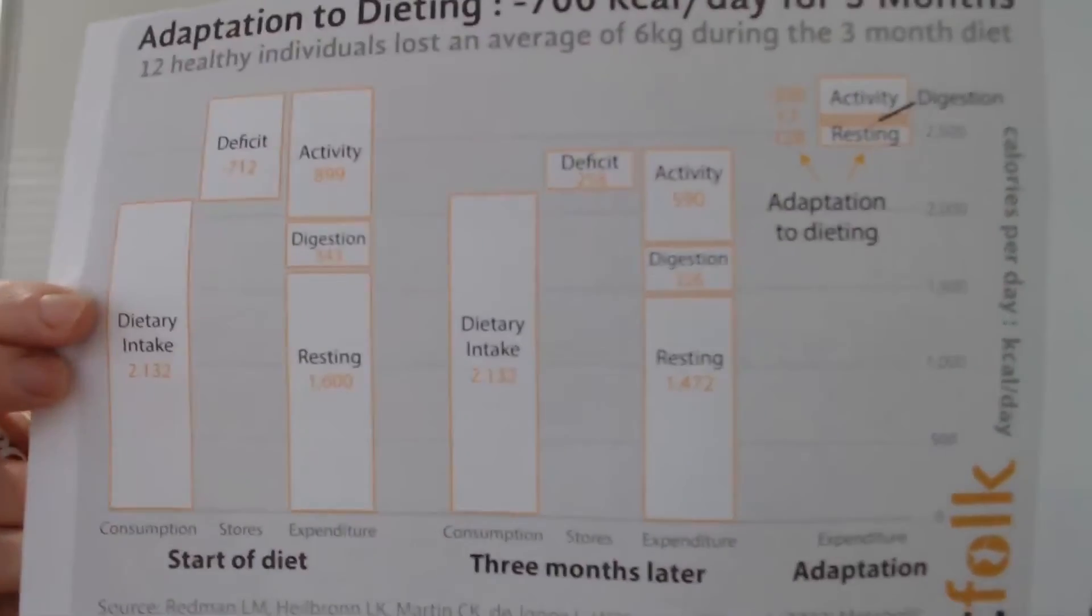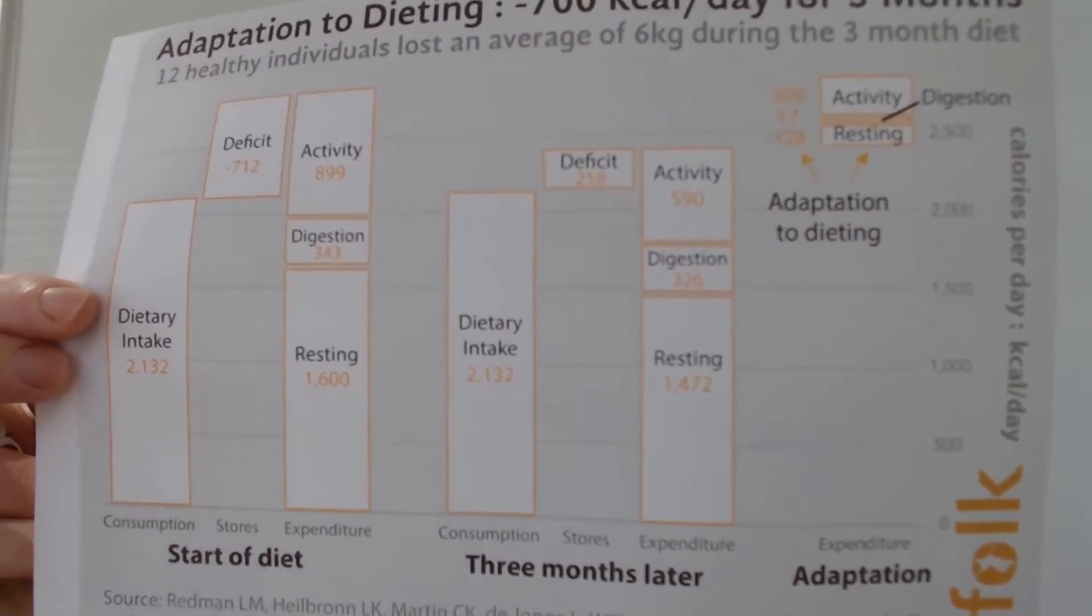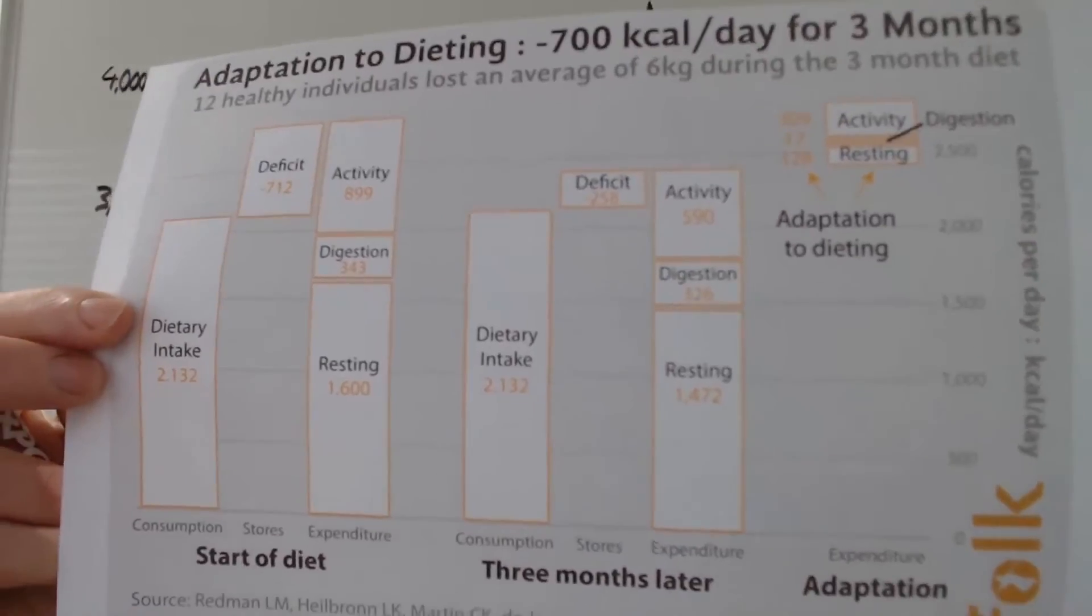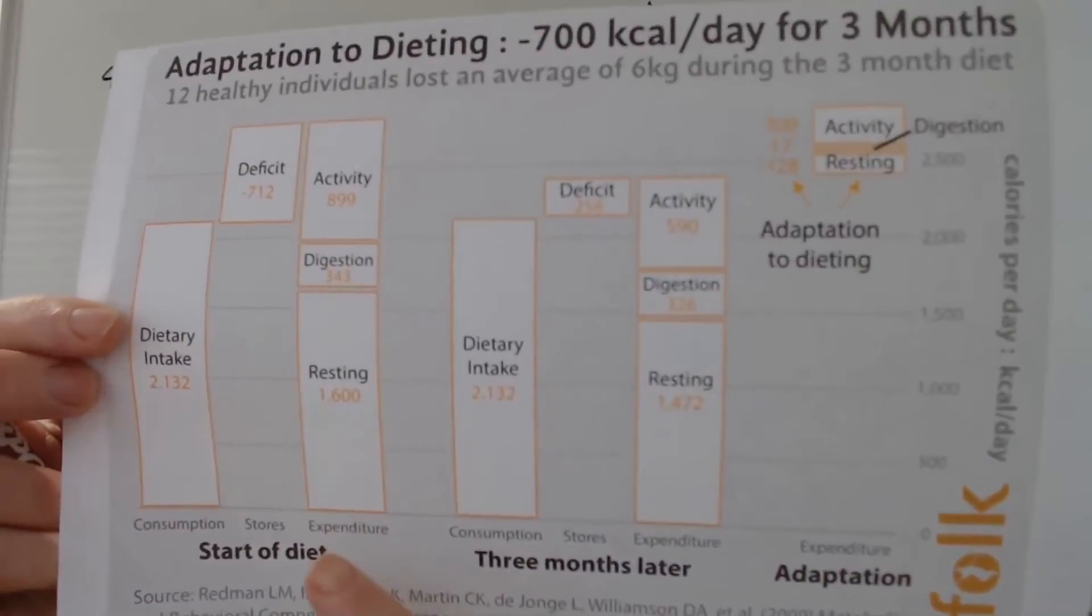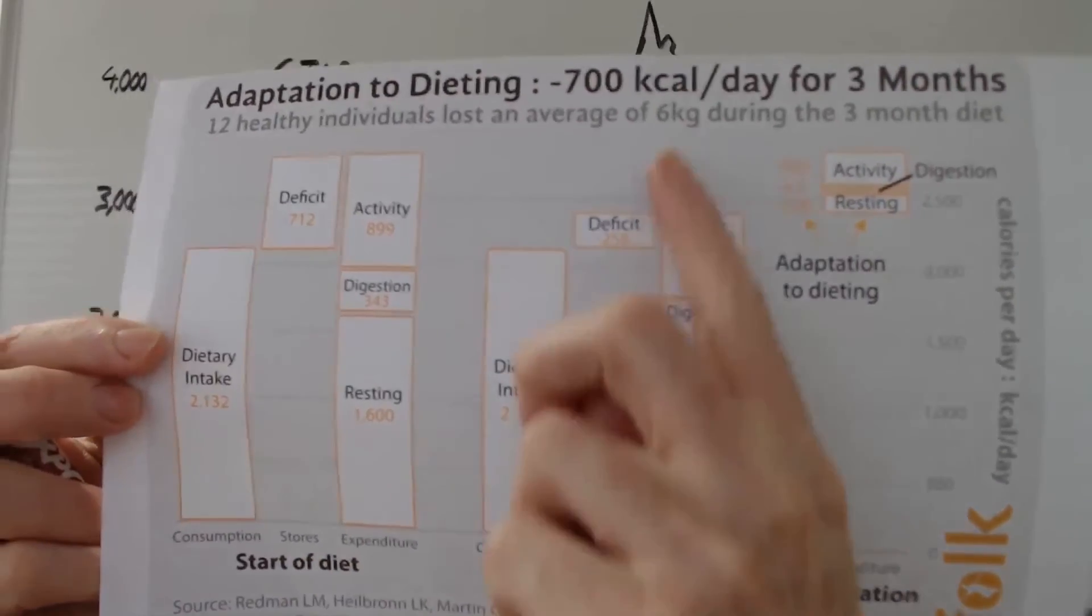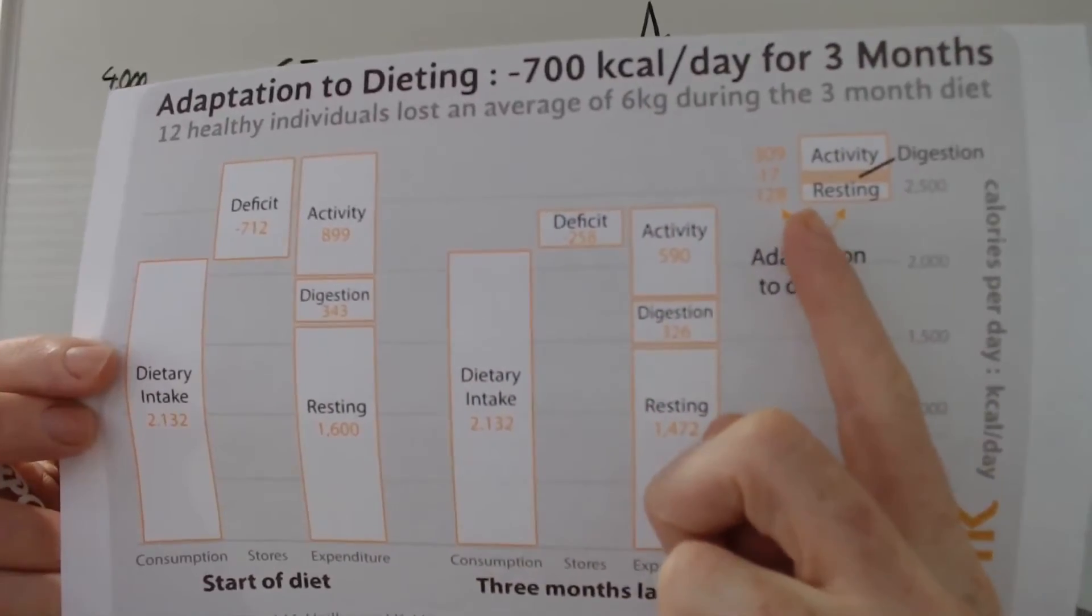But here's a much more normal study. This is one where they took people who are eating 2,800 calories, and they created a 25% deficit in a ward condition. So it was really well controlled. They started, they lost like six kilos.